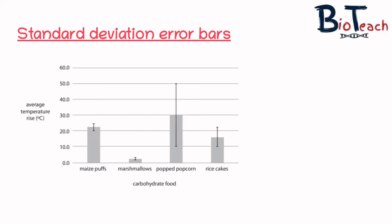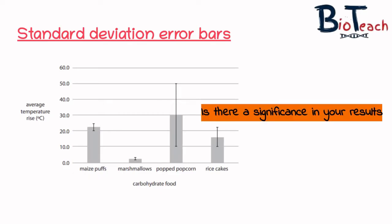The last thing error bars can show you is whether there is a likelihood of there being a significant difference between data sets. A statistically significant difference means that the results seen are most likely not due to chance or sampling error.